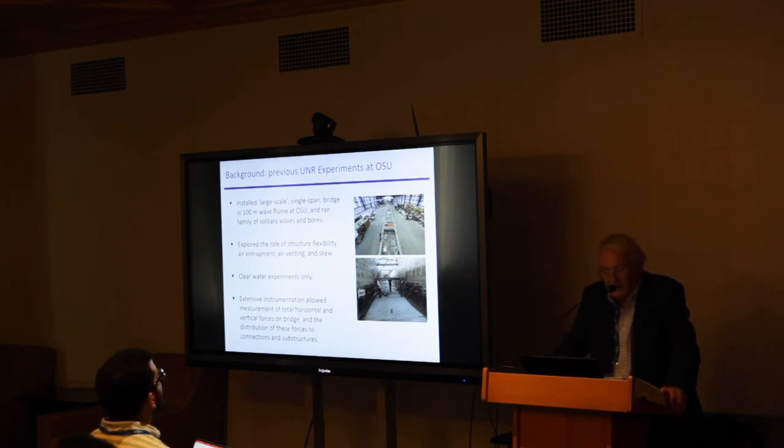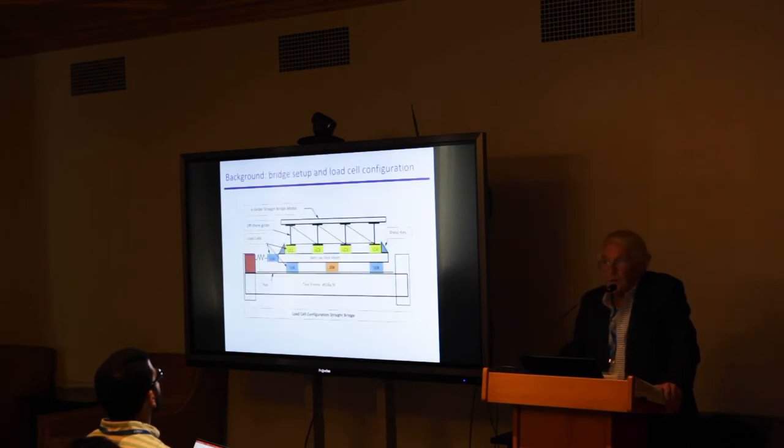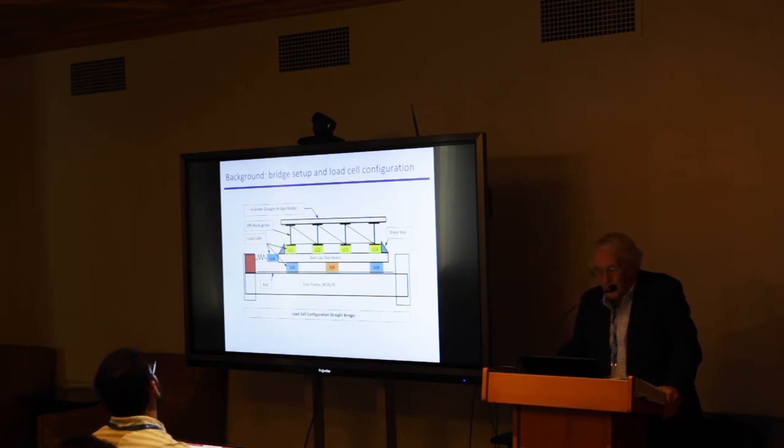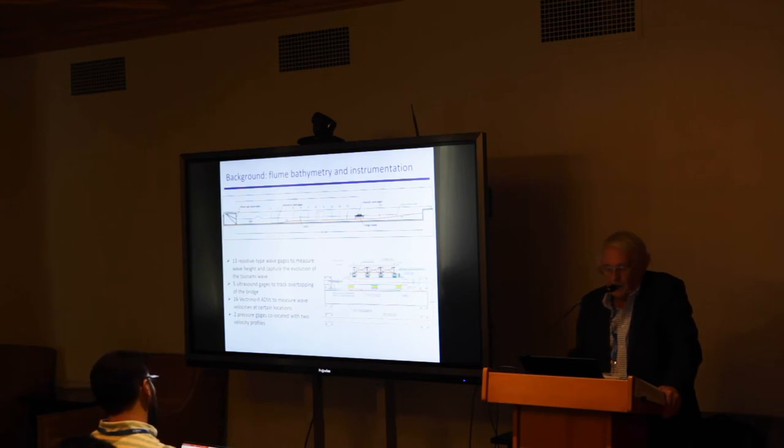With extensive instrumentation on the bridge and in the flume, we were able to get total horizontal loads, vertical and horizontal, and the distribution of these forces to the connections and substructures using load cells under every girder, load cells under the bent cap for vertical and horizontal loads, and also a load cell giving us the shears which would go to the substructures or superstructure. The bathymetry: the bridge is that black dot here, with the wave maker at the extreme left hand side.